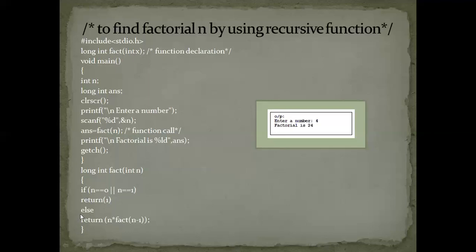Else, it returns n into fact(n minus 1). Since the value of n is 4, it needs to find the factorial of n minus 1, which is 3. So we get 4 into 3 into 2 into 1. The calculation gives: 4 into 3 is 12, 12 into 2 is 24, and 24 into 1 is 24. So the factorial result is 24.